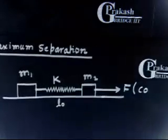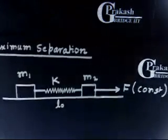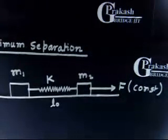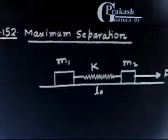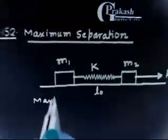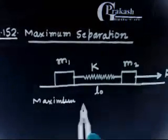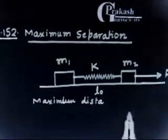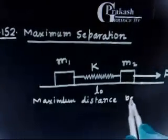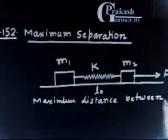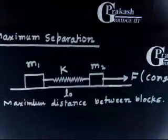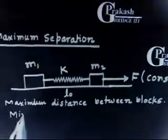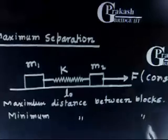This force F is constant. We have to find the maximum distance between blocks during the subsequent motion of the system. We also want to find the minimum distance, and the minimum distance is very easy to find, as you will see soon.